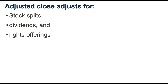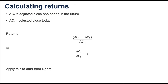When we use the adjusted close, we can use it to calculate historical returns, and the way we do it is indicated here. We use the adjusted close from one period in the future, the adjusted close for today, and divide it by the adjusted close for the day. You see two ways to implement that on this slide, and either one results in the same number — you can factor out and show that those two are equivalent.